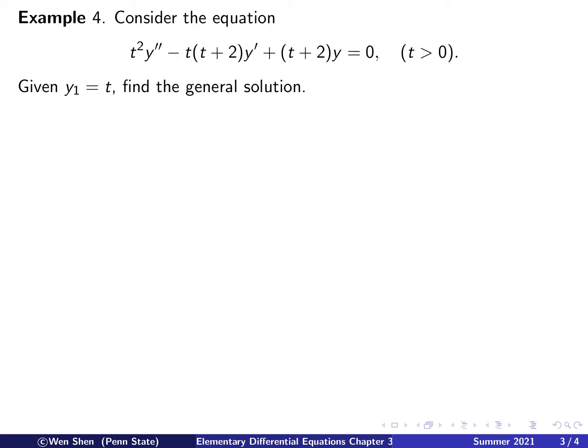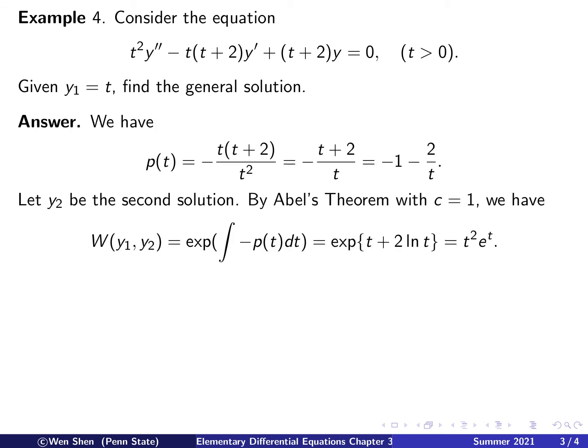Here is an example. We are given an equation, second order, linear, variable coefficients, though homogeneous, with t² here, and therefore t cannot be zero. So t is bigger than zero, the part we are considering. And then it's given that Y1 equals t is a solution, and we want to find the general solution. We know we just need to find Y2, and then we can quickly form the general solution.